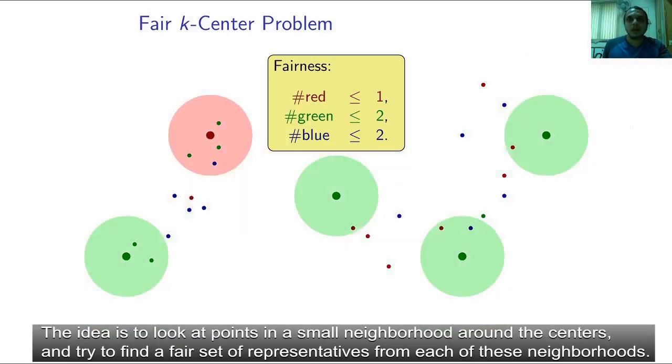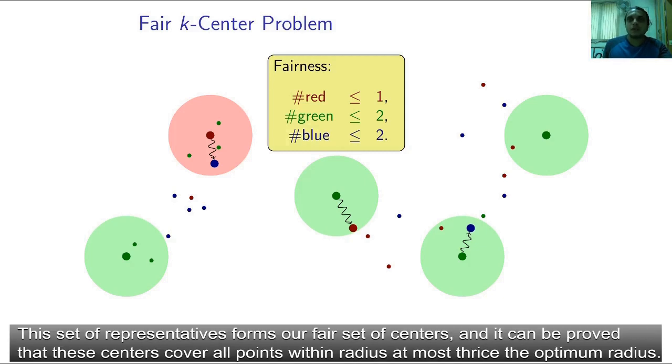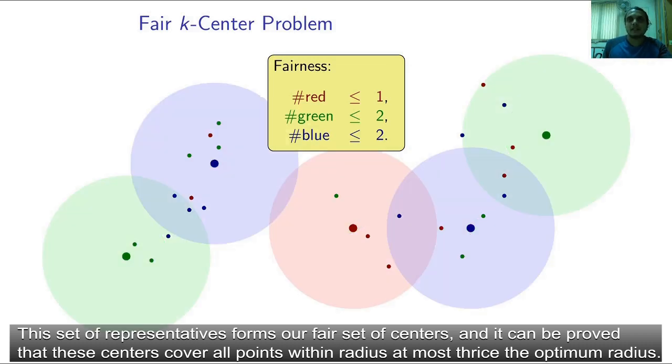The idea is to look at points in a small neighborhood around the centers and try to find a fair set of representatives from each of these neighborhoods. This set of representatives forms a fair set of centers and it can be proved that these centers cover all points within the radius at most thrice the optimum radius.